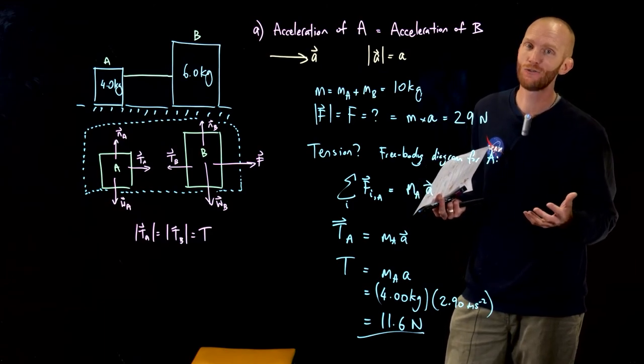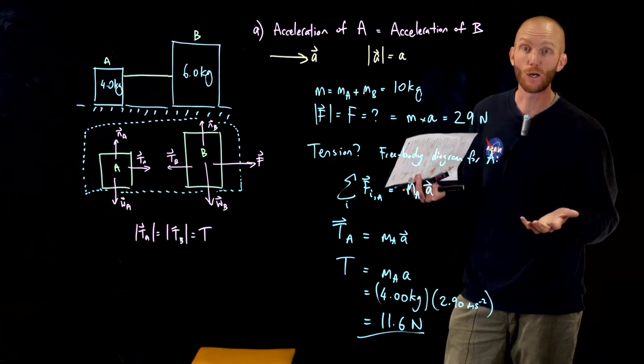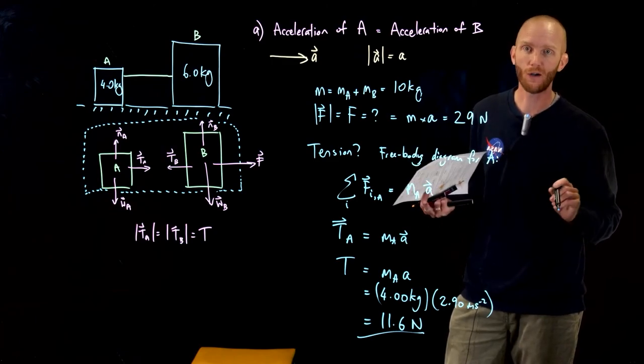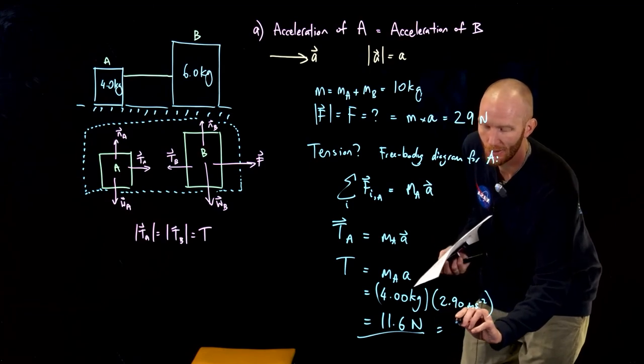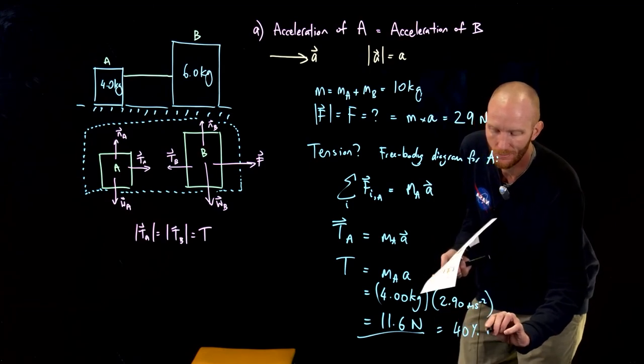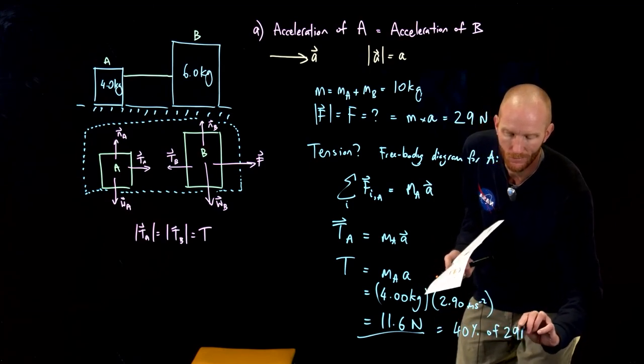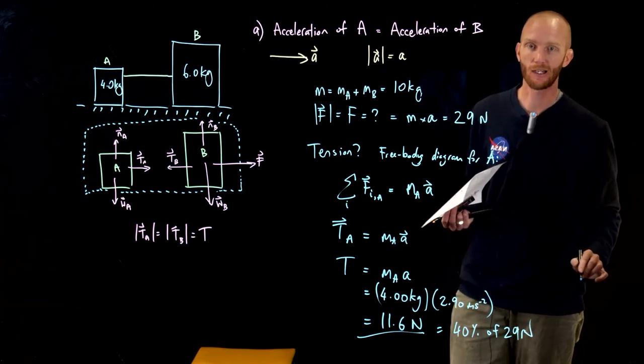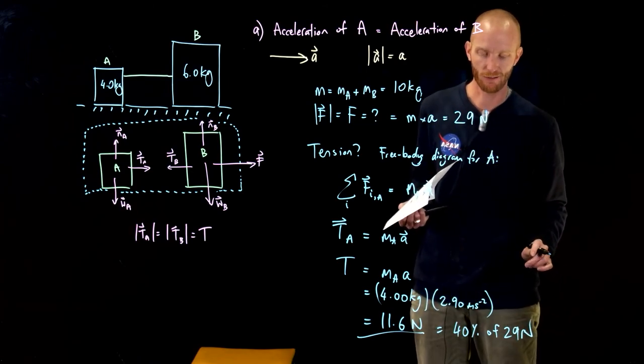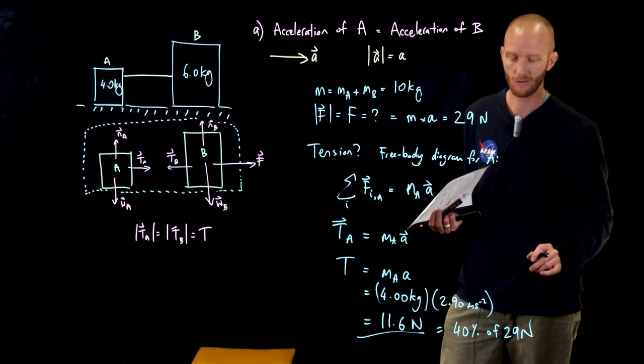Because that tension force is only pulling 40% of the box, the overall box weight, we should have that this is equal to 40% of 29 newtons. I haven't done that calculation but I'm pretty sure it's correct. If anyone wants to check, that would be awesome.